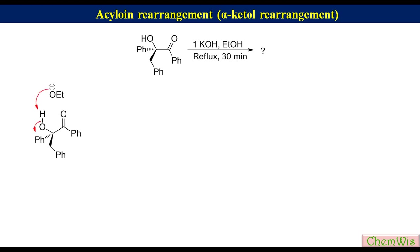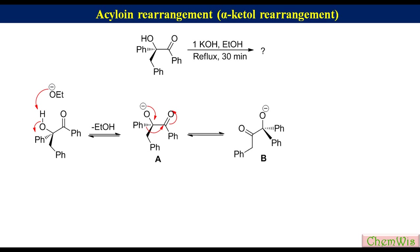In species A, there are two migratory groups: phenyl and benzyl. The phenyl group has greater migratory aptitude than benzyl, so migration of the phenyl group in species A to the keto group produces species B, which after protonation produces the rearranged product.